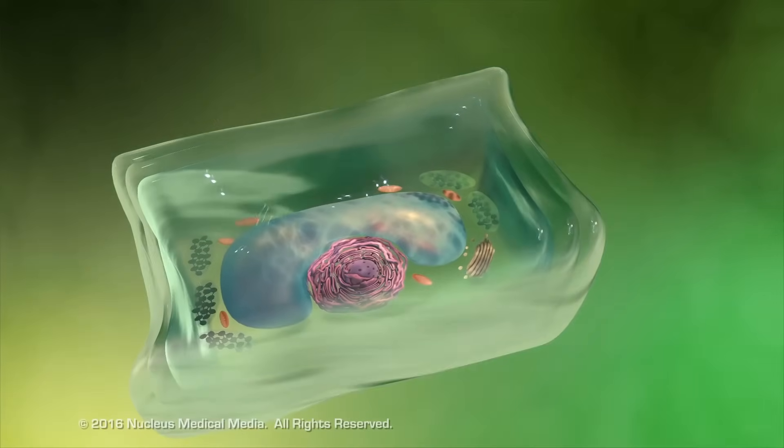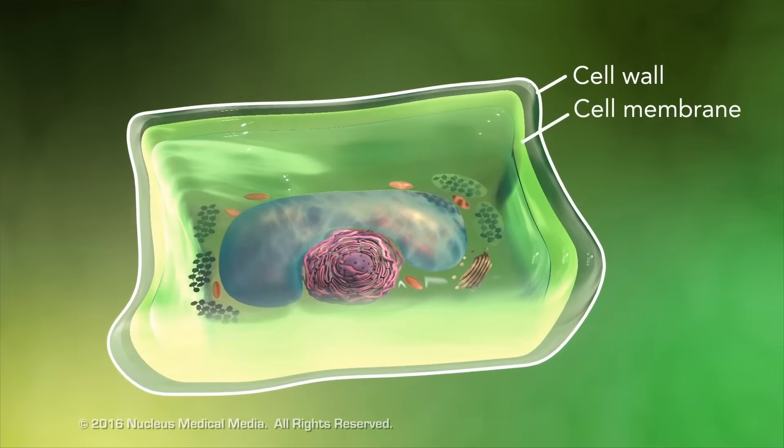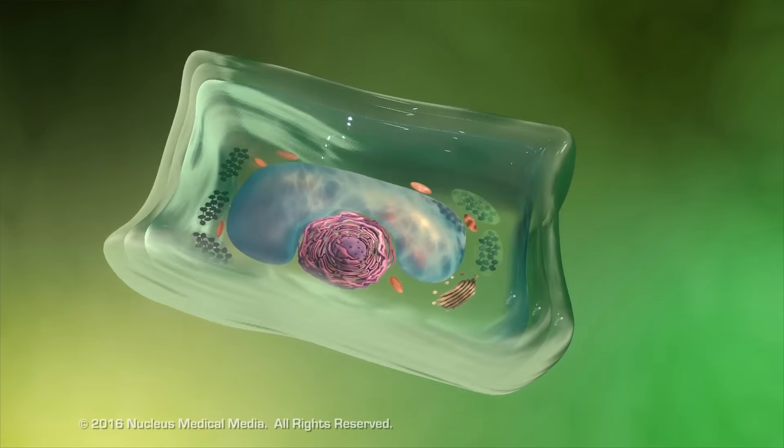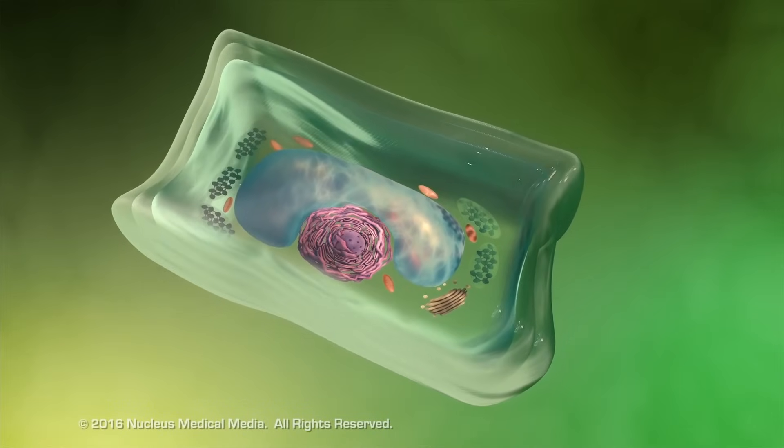Plant cells also have a cell wall outside of their cell membranes that shape, support, and protect the plant cell. Animal cells never have a cell wall.